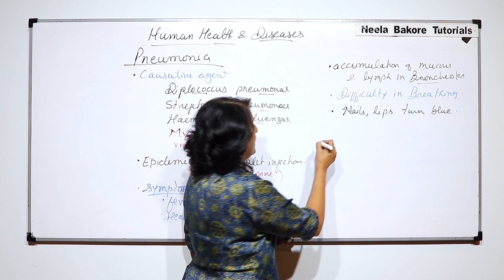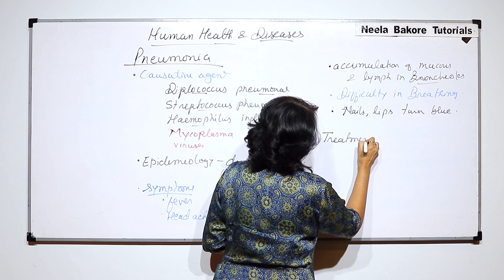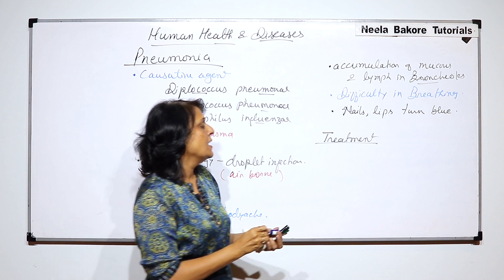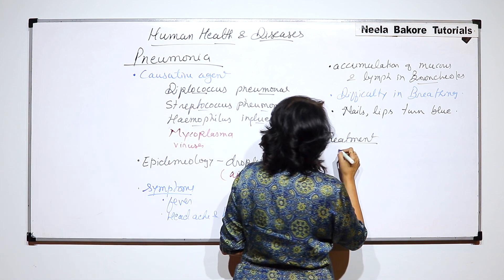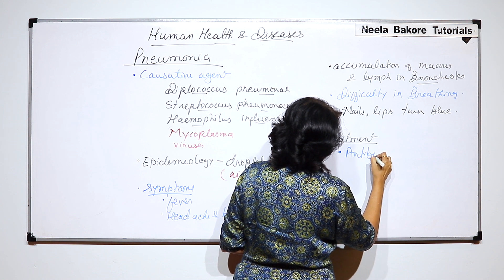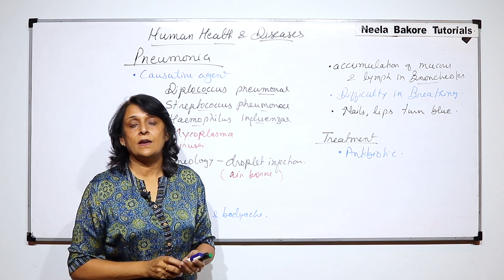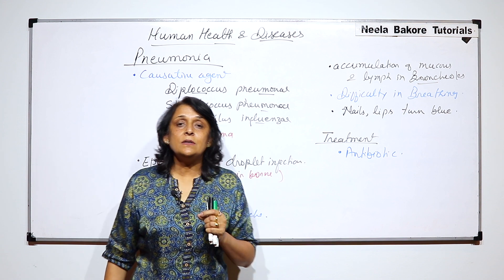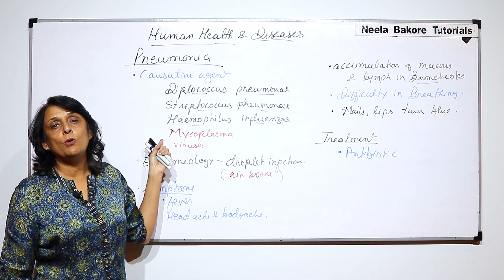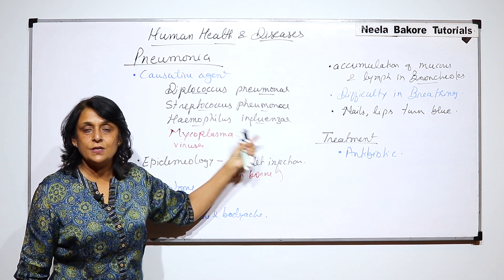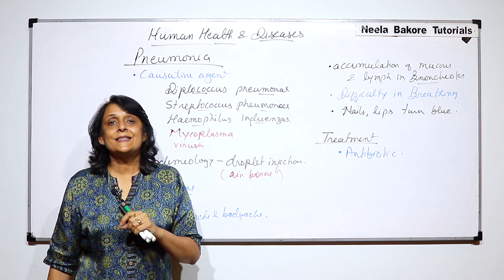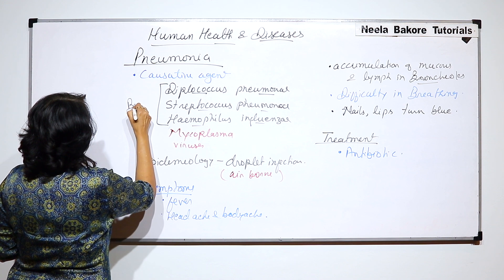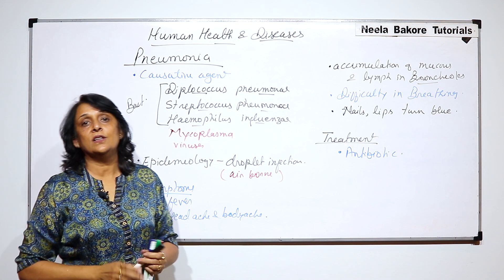If a person has pneumonia, then the treatment: whenever infection is because of a bacterial disease, the most effective treatment is antibiotic. Antibiotics like penicillin are very effective in the treatment of pneumonia. Predominantly it is a bacterial disease — diplococcus, streptococcus, or haemophilus influenzae — but sometimes it can be because of other agents also, so it is considered a predominantly bacterial disease.